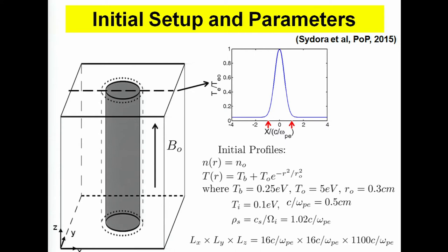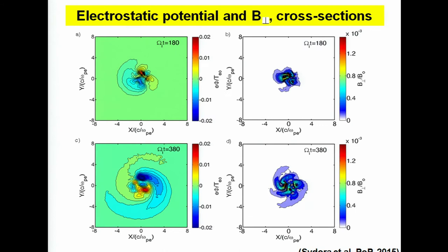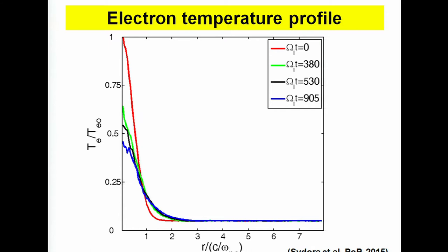We've been able to successfully model these temperature gradient instabilities. The simulations are based on gyrokinetic equations — a gyrokinetic description where each charged particle is E×B drifting, solved kinetically with millions of particles. Here's a cross section of the electric potential which develops in time, and we see the M=1 mode pattern consistent with experiments. We also see smaller scale features connected with convective cells, which are essentially K-parallel equals zero modes that are present and relax the temperature profile. Here's a simulation showing the relaxation of the temperature from these temperature gradient driven modes.